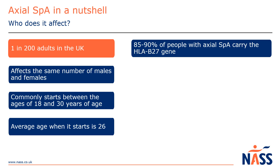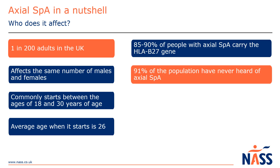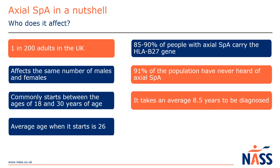There is a genetic link, and 85 to 90% of people with axial SpA carry the HLA-B27 gene. However, it is possible to have axial SpA without this gene, and it's also possible to have the gene and never develop the condition. Despite it being a fairly common condition, a recent study found that 91% of the population have never heard of axial SpA, and unfortunately it takes an average of eight and a half years to be diagnosed.